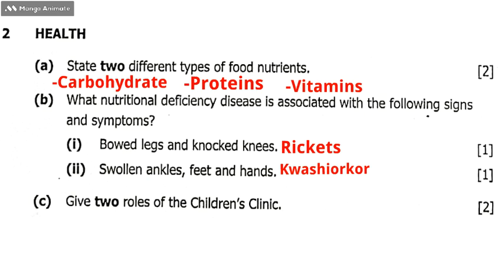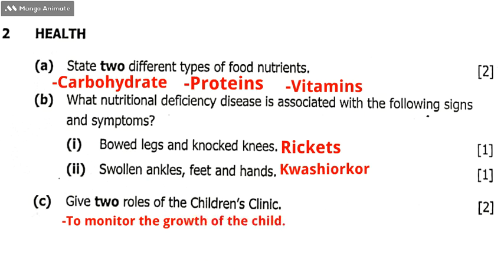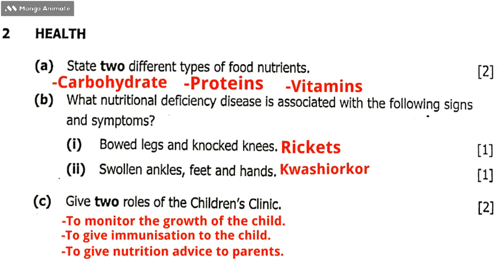Go to question number 2C, which is: give two uses of children's clinics. You should be careful not to confuse this with the clinic card. They are asking why you take children to the clinic. One, to monitor the growth of the child. Two, to give immunization to the child. Three, to give nutrition advice to the parents. They just want two, so you can pick any two from there.